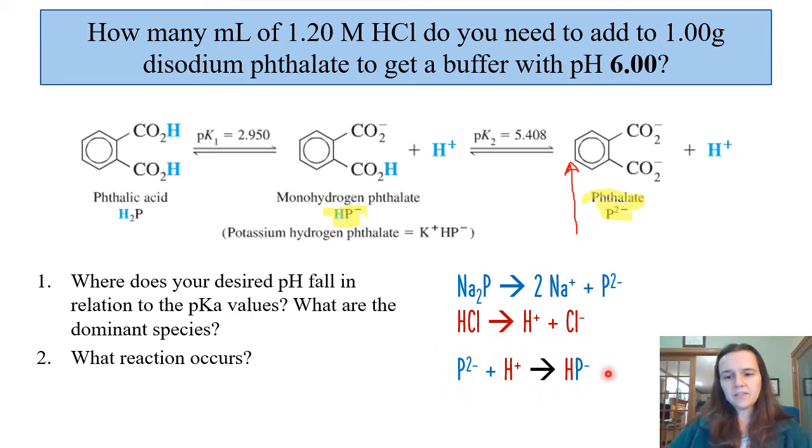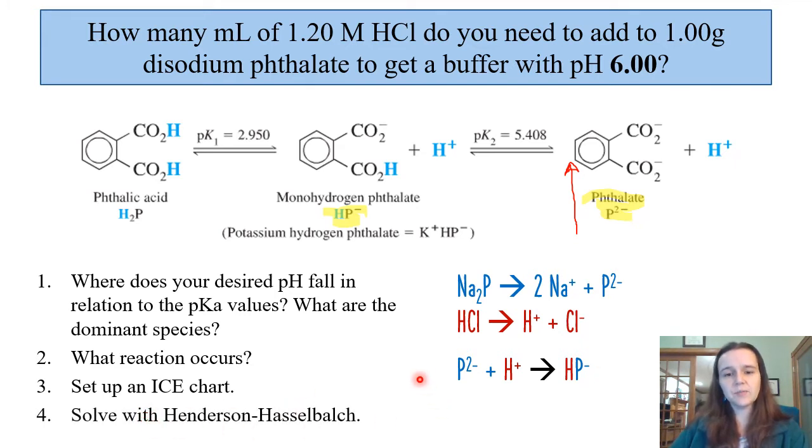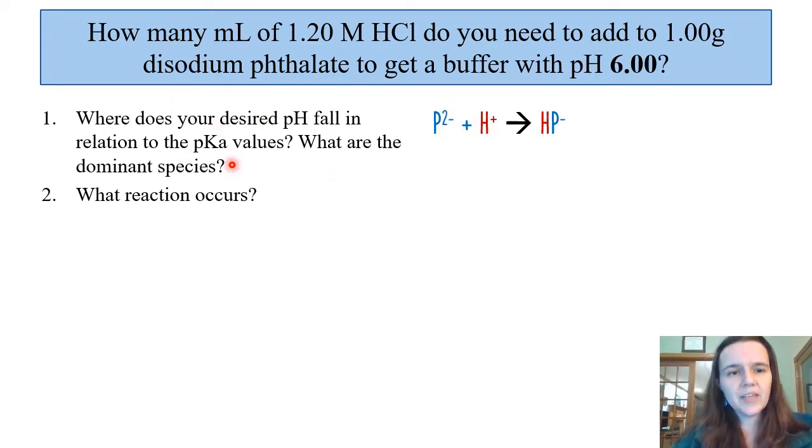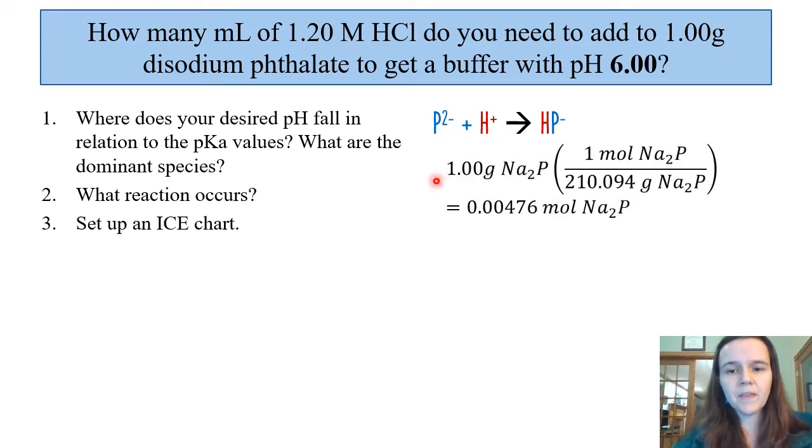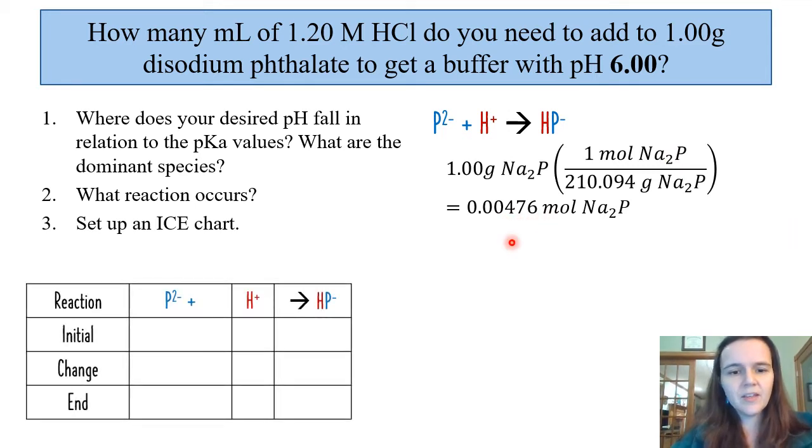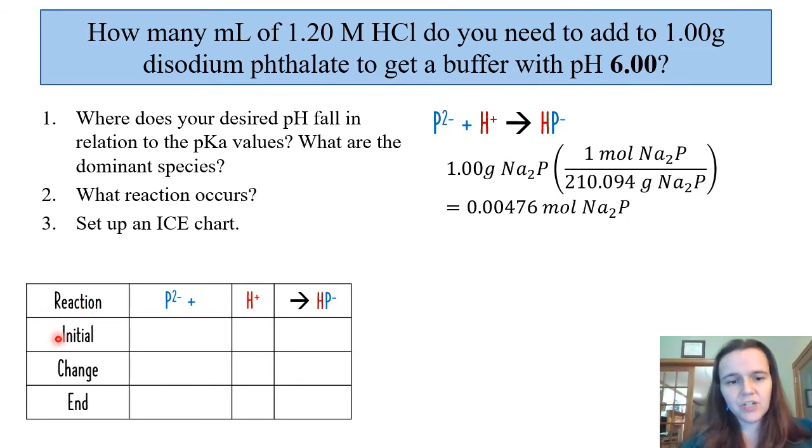The next step after we've identified this being the reaction of interest is to set up an ICE chart, so initial change and endpoint, and then also to serve this with a Henderson-Hasselbalch equation where we're using these two compounds and the pKa that they sandwich. We figured out where our pKa value and pH of 6 is and that the reaction occurring is P2- plus H+ completely react to form some HP-. The next step is to set up an ICE chart. From that we're going to take the information from the question that we have one gram of disodium phthalate to figure out how many moles of phthalate we have.